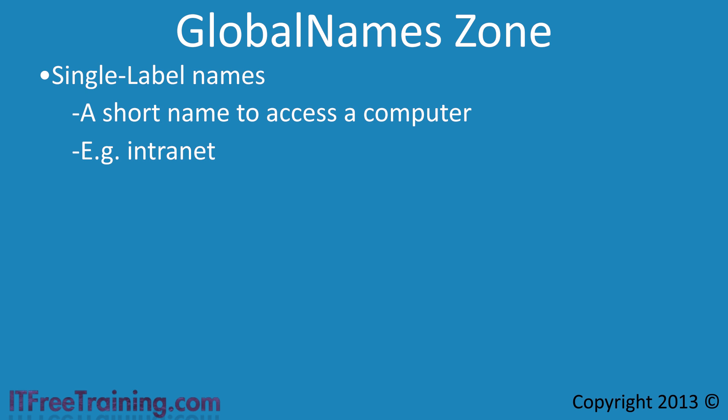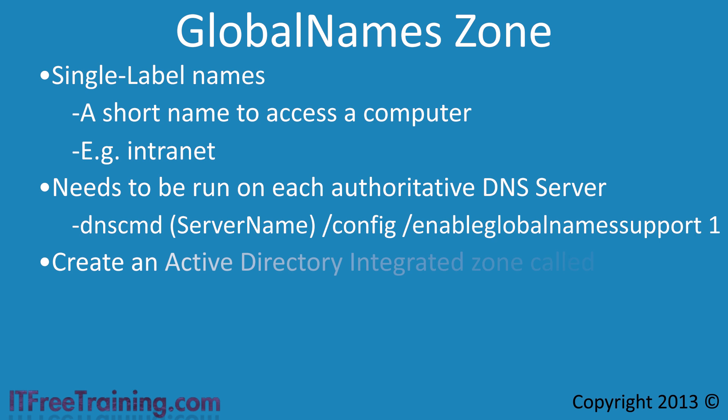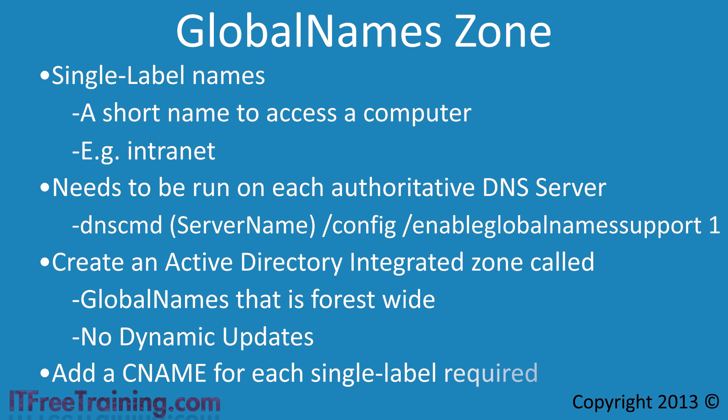Using Global Names, the administrator can hopefully remove WINS from the network. To start allowing clients to resolve single label names, you first need to run a command on every DNS server that will be answering single label name queries. This allows the DNS server to start answering those queries. Once done, the next step is to create an Active Directory integrated zone called Global Names that is replicated forest-wide, with dynamic updates disabled. Then, a CNAME record is added to the Global Names zone for each single name you want to resolve, and clients can then resolve single label names using DNS.